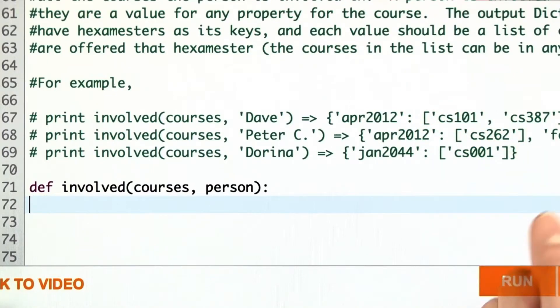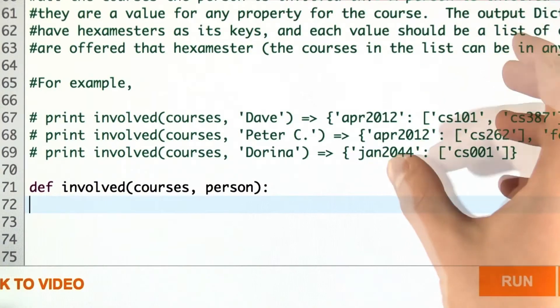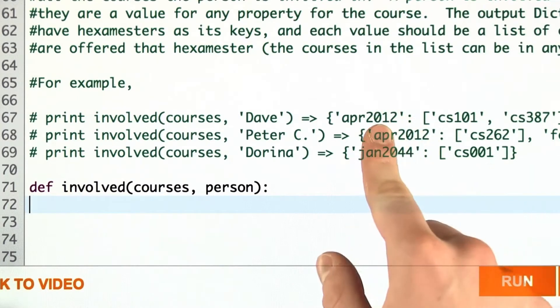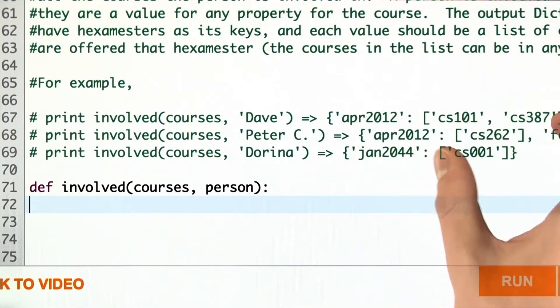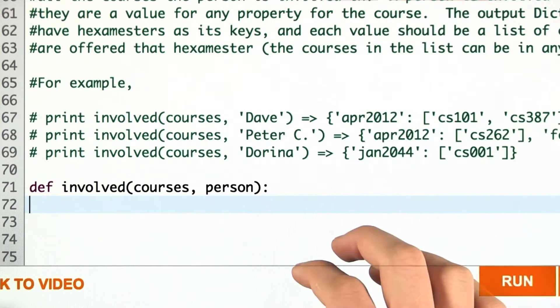In the last question involving this data structure, we want to create a dictionary that contains the hexamesters as the keys, and the values as a list of each course a given person is involved with.